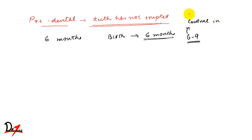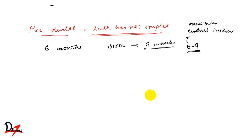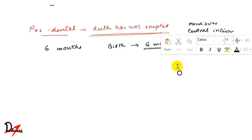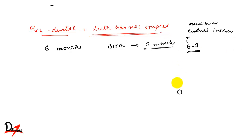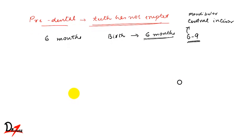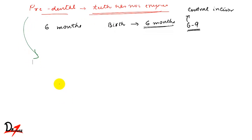This is the normal erupting time of the first deciduous tooth, which is the mandibular central incisor. It could range from six months to about nine months, so even if the child has the mandibular central incisor erupting at nine months, that is considered normal. In the pre-dental period, the thing we see is a gum pad.